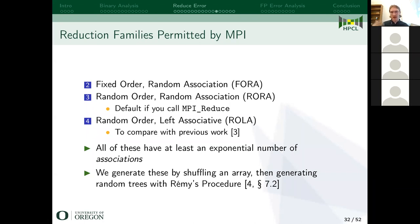I have two things I vary to create these families: shuffling the array — which affects commutativity — and generating a random reduction tree, which affects associativity. So we have fixed and random ordering and associativity, giving four combinations. All of these have at least an exponential number of different results you can get. Generating different orderings is straightforward — we just shuffle the array. Generating different associations is done by generating a random tree using Remy's procedure. I want to focus on the third family — random order, random association — because that is the default when you call MPI_Reduce without any special flags.